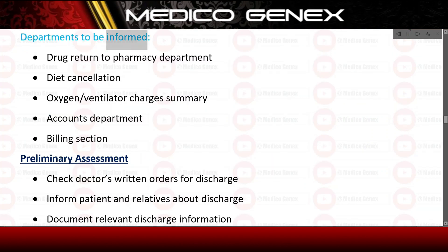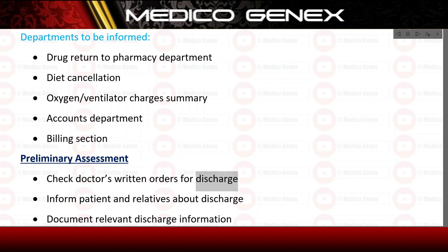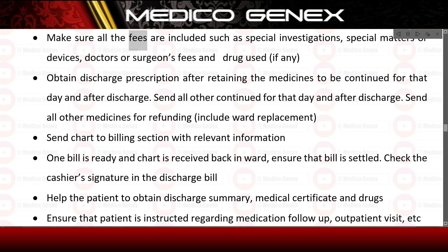Departments to be informed: drug return to pharmacy department, diet cancellation, oxygen and ventilator charges summary, and accounts or billing department. Preliminary Assessment: Check the doctor's written orders for discharge. Inform the patient and relatives about discharge and document relevant discharge information. Make sure all fees are included, such as special investigations, special materials or devices, and doctor's or surgeon's fees and drugs used.